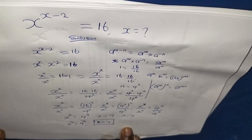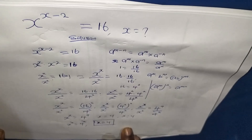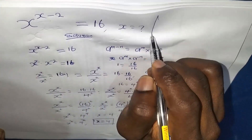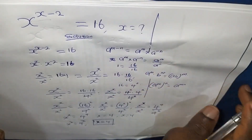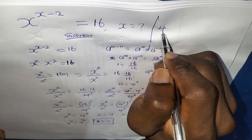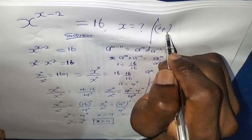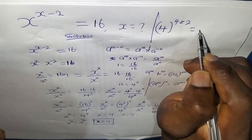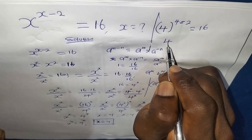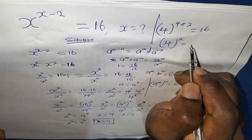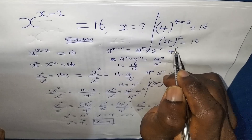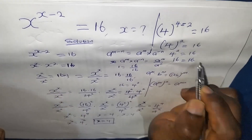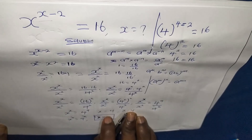Let's verify whether x equals 4 is correct by plugging it into the original equation. We have 4 to the power of 4 minus 2, which gives us 4 to the power of 2, which is equals to 16. And 16 is equals to 16, so the value of x is confirmed to be correct.